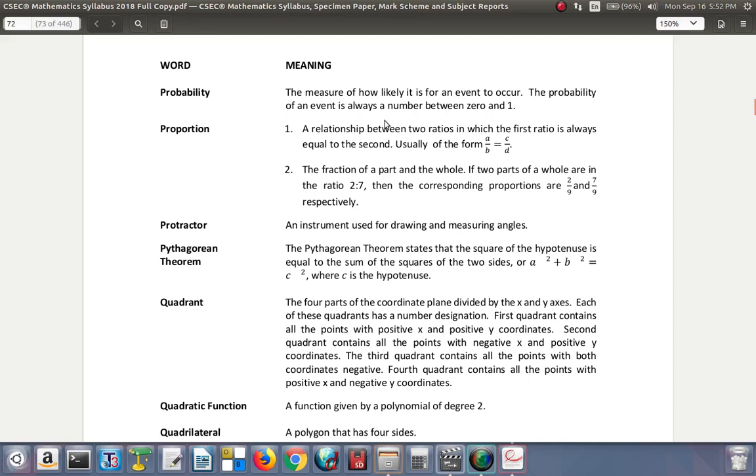Probability. The measure of how likely it is for an event to occur. The probability of an event is always a number between 0 and 1. Proportion. A relationship between two ratios in which the first ratio is always equal to the second. Usually in the form A over B is equal to C over D. The fraction of a part and the whole, if two parts of a whole are in the ratio 2 to 7, then the corresponding proportions are 2 to 9 and 7 to 9 respectively.